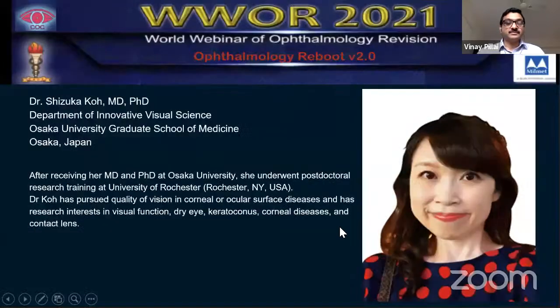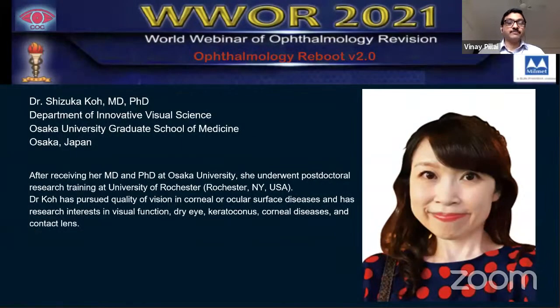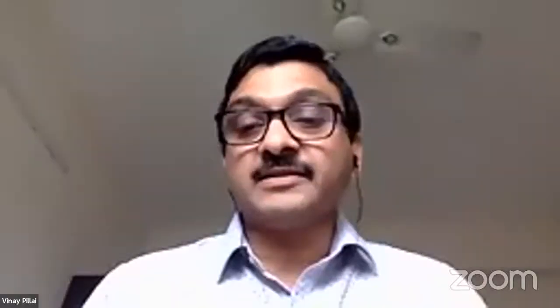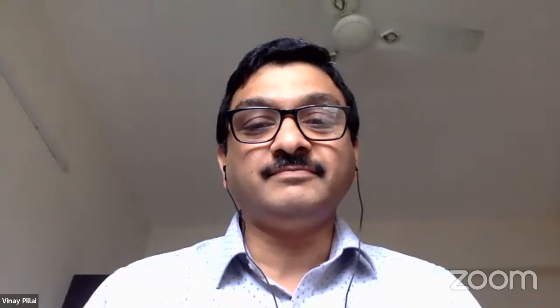Dr. Shizuka Ko from Osaka University Graduate School of Medicine is introduced. After her MD and PhD from Osaka University, she completed research training at the University of Rochester. Her areas of interest include visual function, dry eye, keratoconus, contact lenses, and other corneal diseases. She begins sharing her presentation.